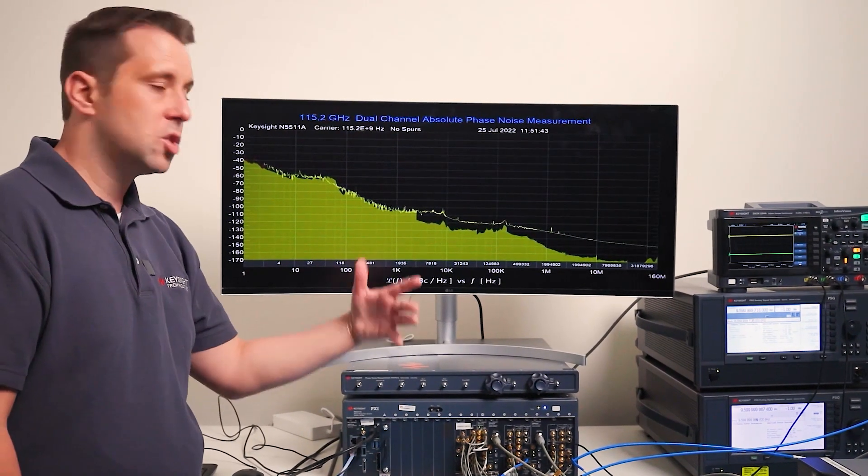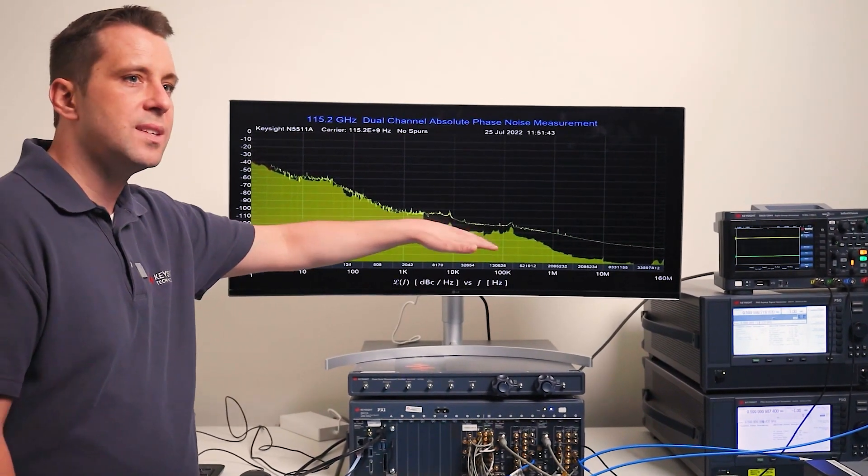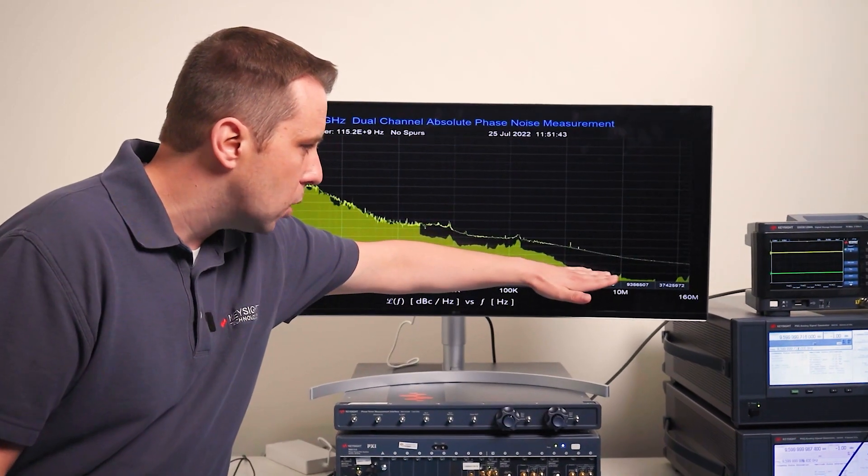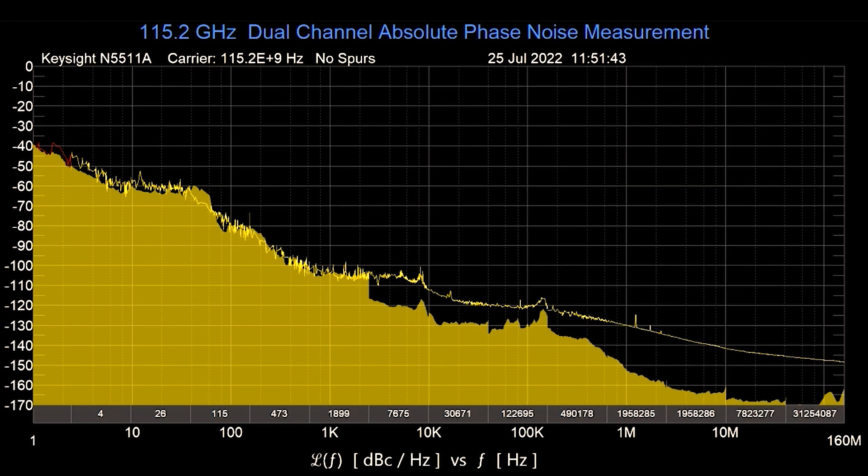The nice thing about showing the uncorrelated noise is you can actually see test margin. Notice how far out here there's about 20 dB or so of test margin. And closer in we're still doing more cross correlations and creating more test margin.